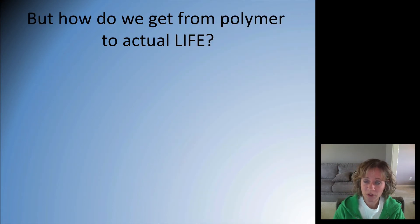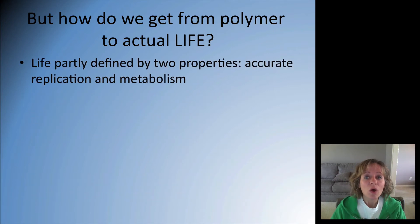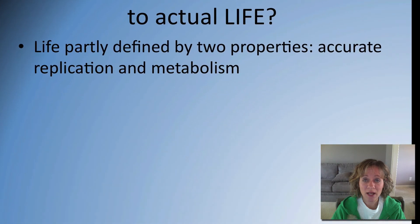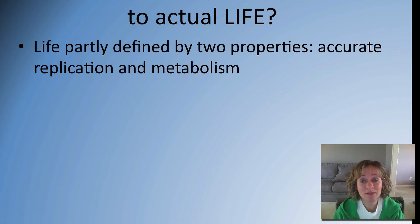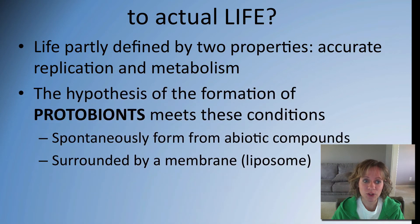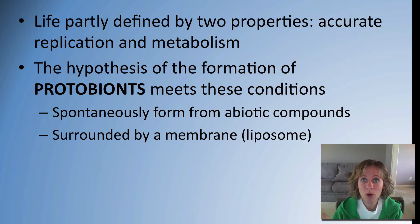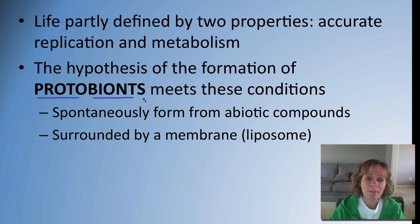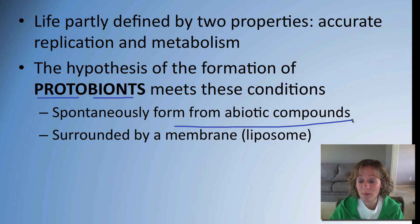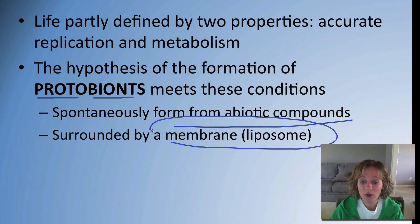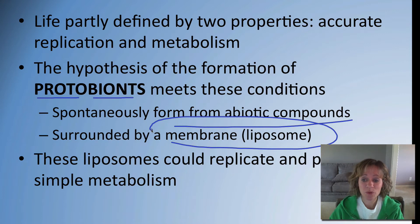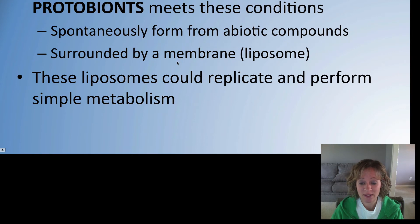So we've got a building block, we've got a polymer, and now we have to ask how do we get to actual life? Life is partly defined by two properties: accurate replication, because genetic information has to be passed on to the next generation, and basic metabolism — the ability to get and use energy and nutrients. The hypothesis for the formation of protobionts — proto meaning early, bionts meaning living — is that these very early life forms can spontaneously form from abiotic compounds, are surrounded by a membrane called a liposome, and can replicate and perform simple metabolism.